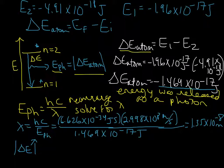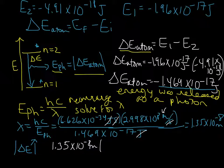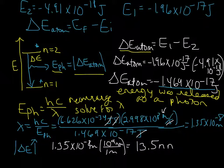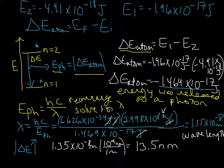Let's make sure we know how we got to meters: joules on the bottom and joules on the top cancel out; seconds in the numerator from Planck's constant cancel with seconds in the denominator from the speed of light, leaving just meters. The last thing we need to do is convert to nanometers. Since 1 meter equals 10 to the 9 nanometers, we end up with 13.5 nanometers — that's the wavelength of the photon emitted when this lithium ion went from the n equals 2 first excited state to the ground state.